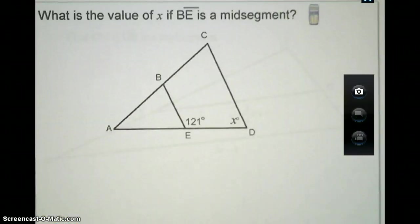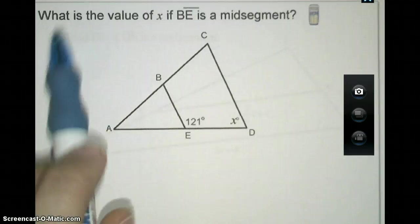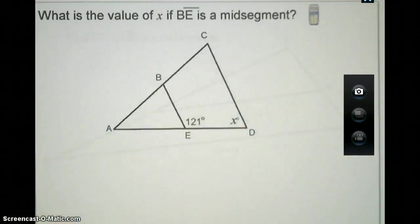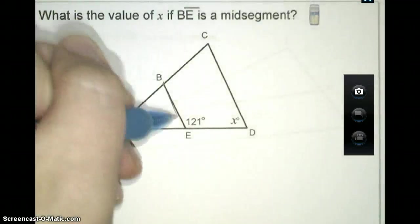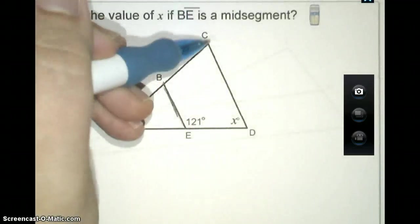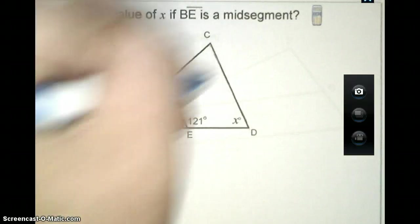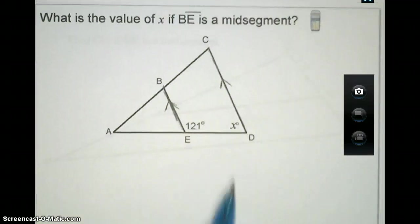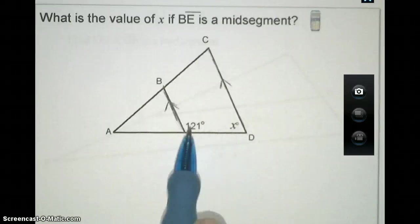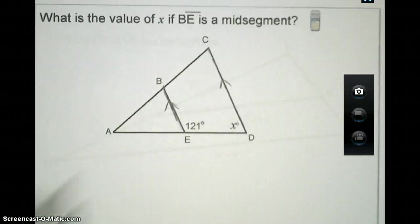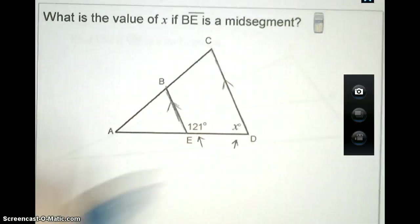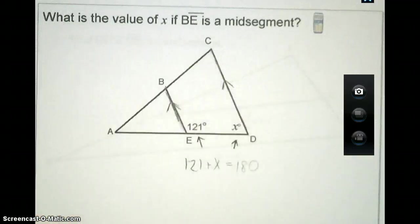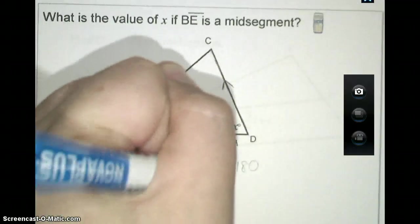This next question uses the second half of the midsegment theorem we've talked about. In this problem, it's asking what is the value of X if BE is a midsegment of triangle ACD. So in this case, this side of BE will end up being parallel to CD. This is the fact that we want to use for this problem. The four postulates that we talked about in Chapter 3 on parallel lines will end up coming into play here. The 121 degrees and the X are same side interior angles. Based on the same side interior theorem, these two angles will be supplementary to each other. Therefore, 121 plus X is going to be 180 degrees. That means the angle X here will end up being 59 degrees total.